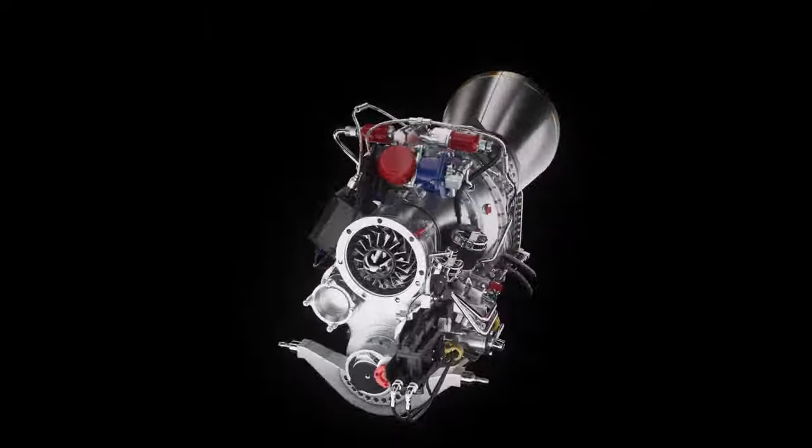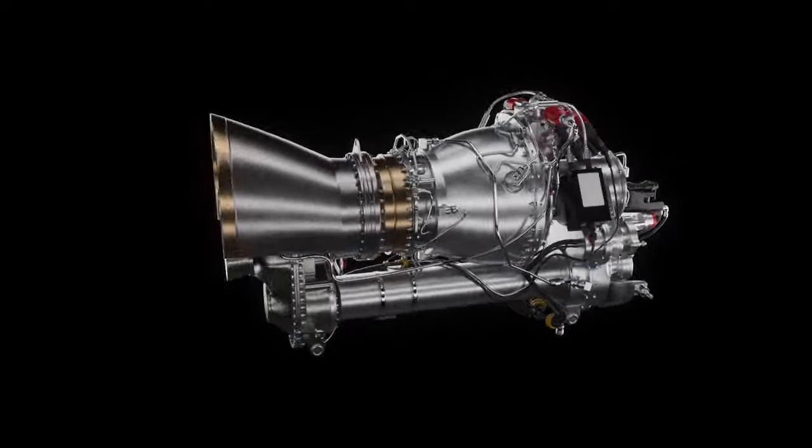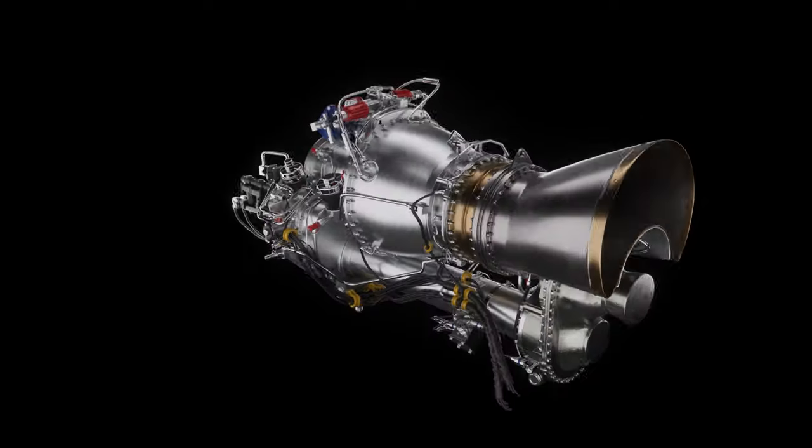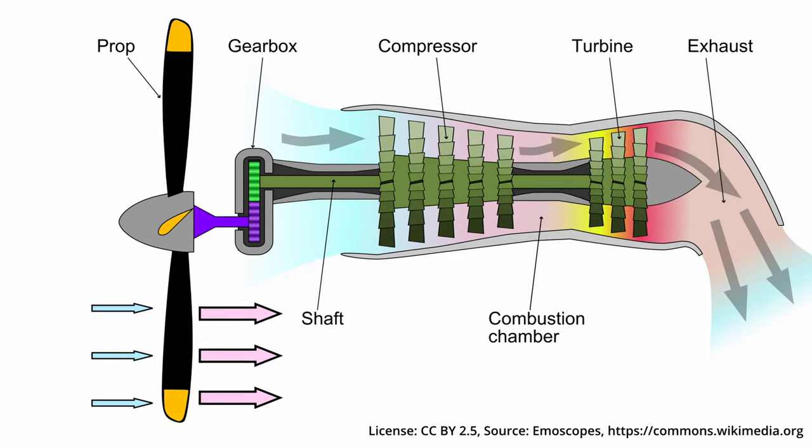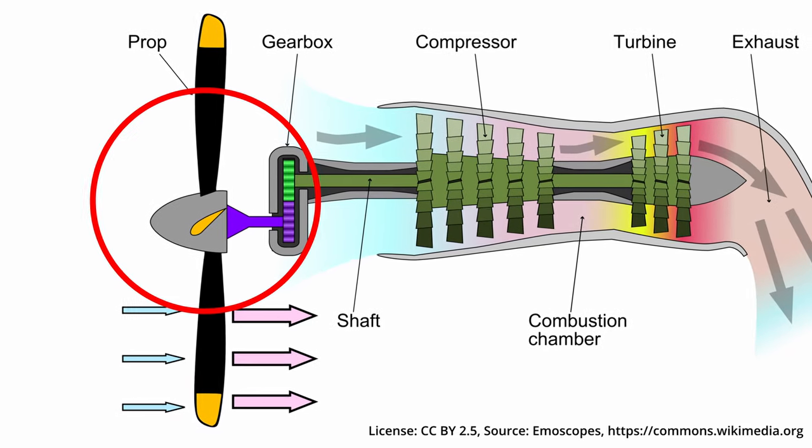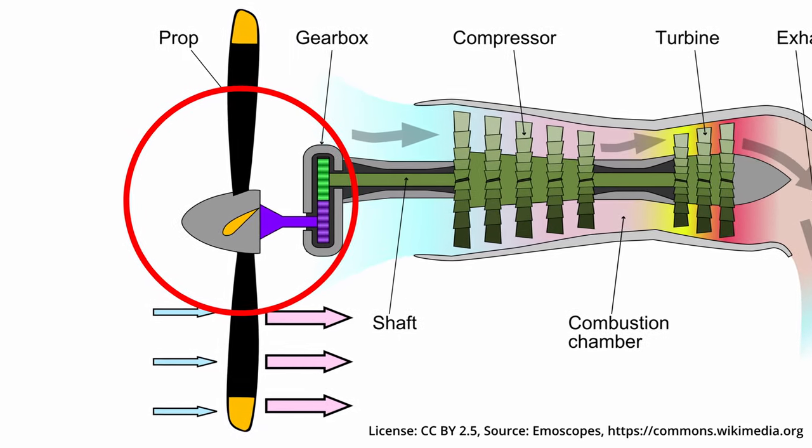Now, let's clarify the differences to an engine which is used in fixed-wing aircraft. In a turboprop aircraft, the difference lies in the fact that the shaft power is used to drive propellers instead of rotors.